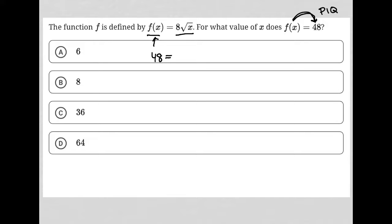It's asking me for the value of x. So I'm going to say 48 equals 8 square root x. I'm just recreating this now that I know that f(x) is 48. And now I can solve for x, and that'll give me my answer.